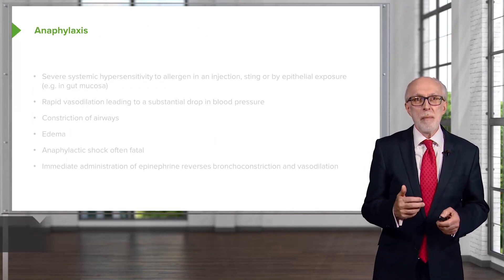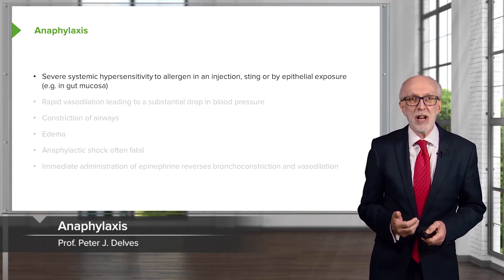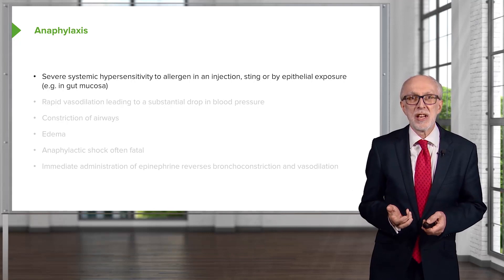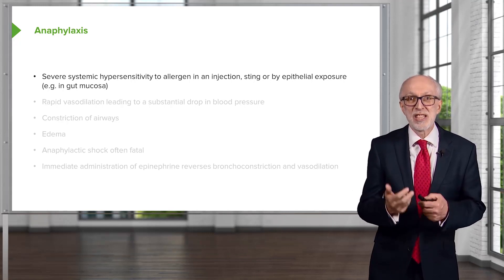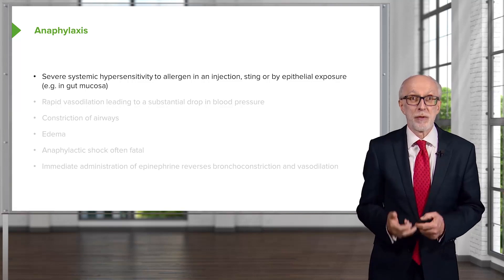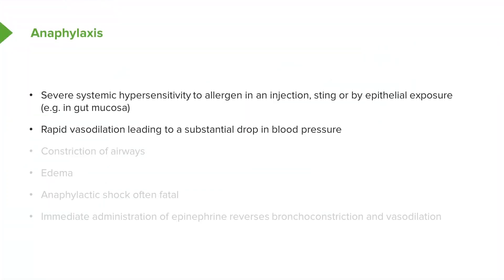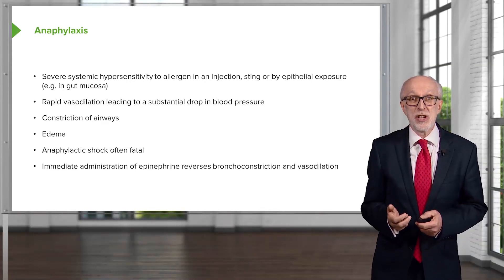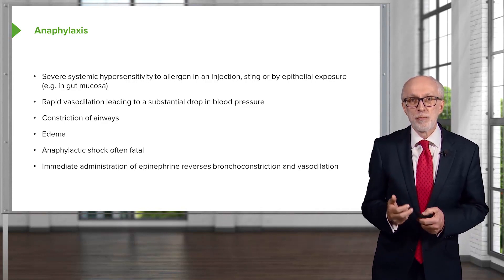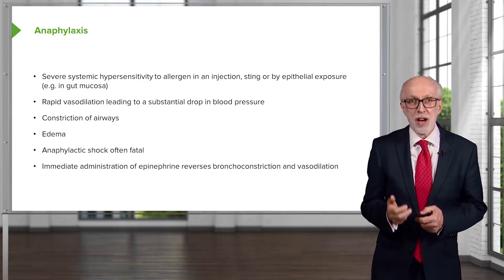We use the term anaphylaxis to describe a severe systemic hypersensitivity to allergen via injection, a sting, or by epithelial exposure — for example, in the gut mucosa. It involves a rapid vasodilation leading to a substantial drop in blood pressure, constriction of the airways, edema, and anaphylactic shock can result that is often fatal. However, immediate administration of epinephrine can reverse the bronchoconstriction and vasodilation and rescue the patient.